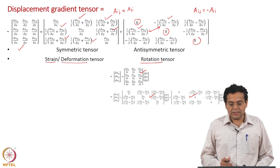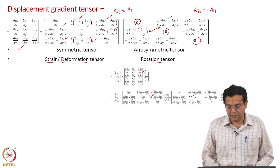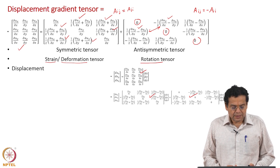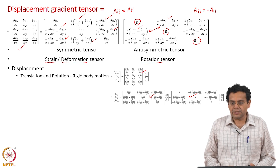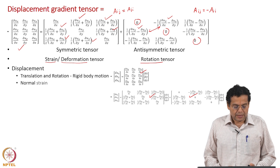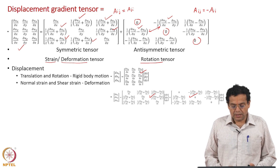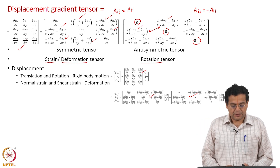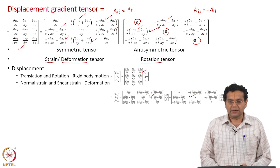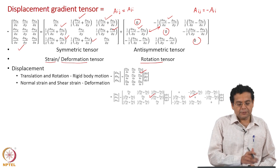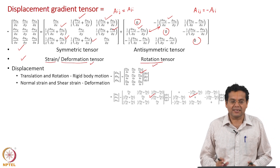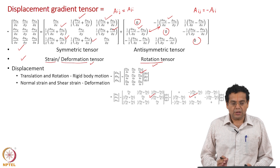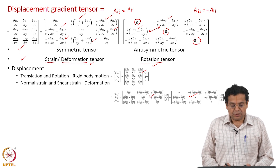We will see why we did all this after the example coming up. In words: displacement is due to translation and rotation — called rigid body motion — and normal strain and shear strain — called deformation. We have proved analytically that the displacement gradient tensor equals the sum of the strain tensor plus the rotation tensor. We will now illustrate this with a numerical example.